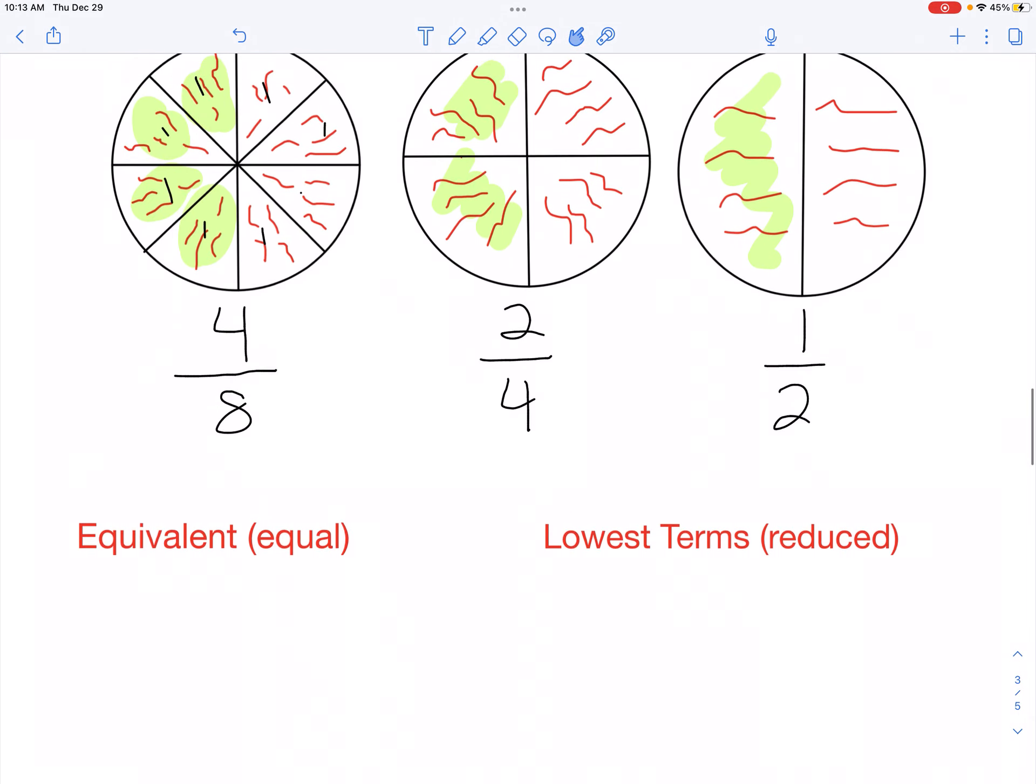Now, we can see that it is the same amount of pizza that we are eating each time, even though the fractions are different. But the fractions aren't different. They are equivalent. And in the word equivalent, we can almost see equal. So four eighths is equal to two fourths, which is equal to one half. They are equivalent fractions.